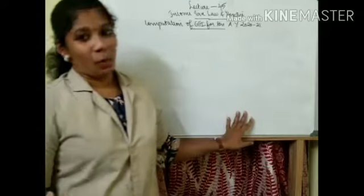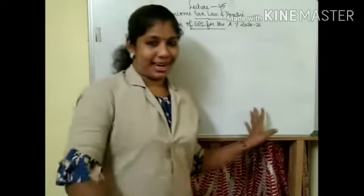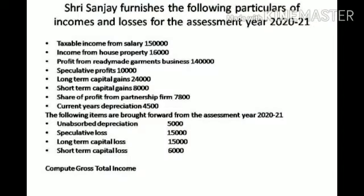So the question is: Shri Sanjay furnishes the following particulars of incomes and losses for the assessment year 2020-21. Taxable income from salary 1,50,000. Income from house property 16,000. Profit from readymade garments business 1,40,000. Speculative profit 10,000. Long term capital gain 24,000. Short term capital gain 8,000. Share of profit from partnership firm 7,800. Current year depreciation 4,500.